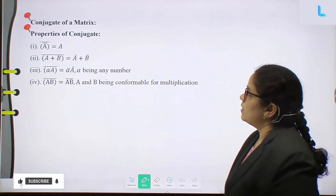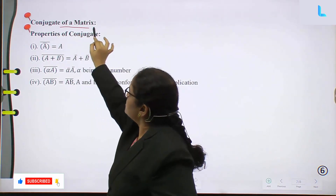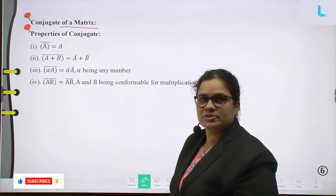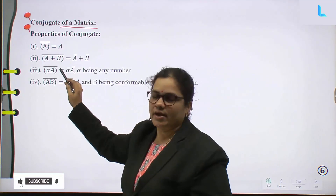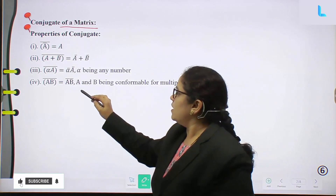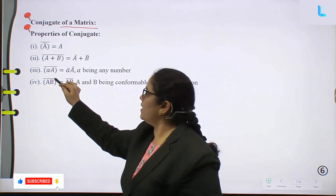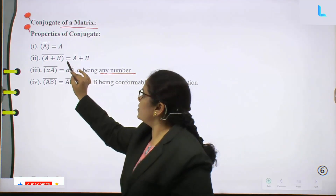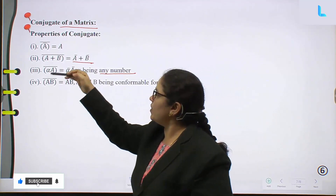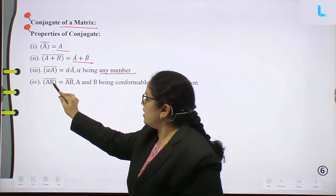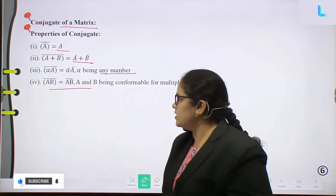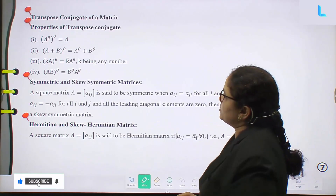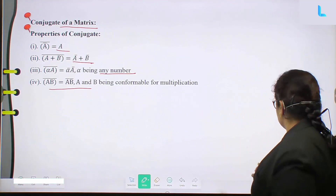Conjugate of a matrix: properties include (Ā)' = A; (A+B)̄ = Ā + B̄; (αA)̄ = ᾱ·Ā where α is any scalar; (Ā)̄ = A; (AB)̄ = Ā·B̄ where A and B are compatible for multiplication.